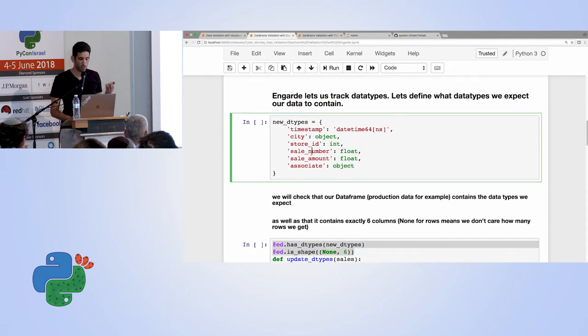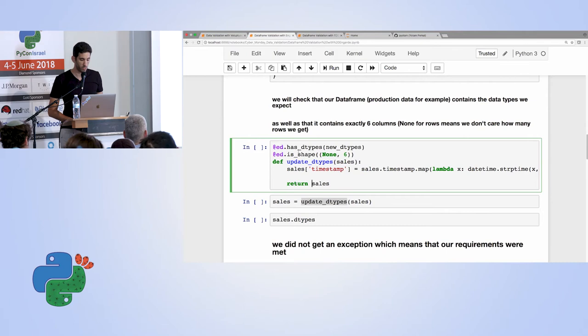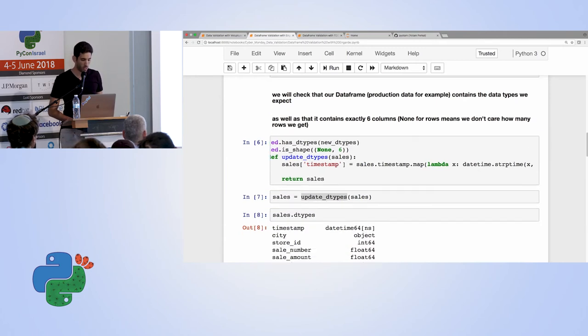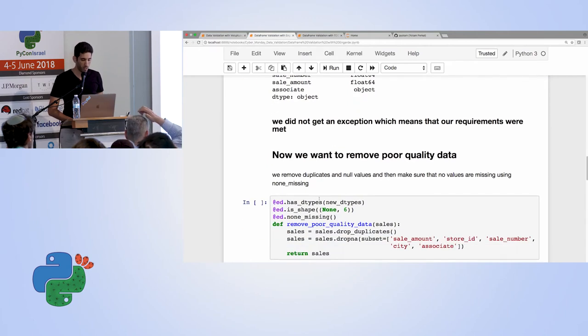This time, I want to define what data types I expect my data to contain, even after I perform some kind of manipulation on it. So these are the data types that I want or expect my data to contain. And now the way that EngGuard works is by decorators. So this one, for example, checks whether the data frame, after I perform some kind of action on it, contains the data types, new data types that I've defined here. And the second decorator basically checks to see whether the shape is none over six. None means I don't care how many rows I have in the data. And six is I expect six feature columns. So I run my function and then the result of this function is being passed on to those decorators. And it's being asserted against my expectations. I run the update data types, I get no errors, which is good. Which means that my expectations were actually correct and I have the correct data types.